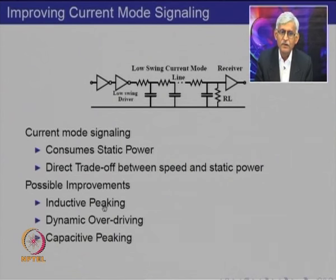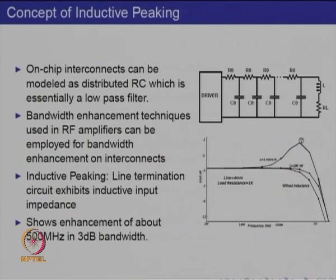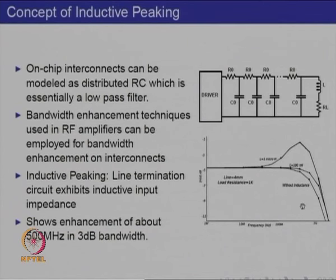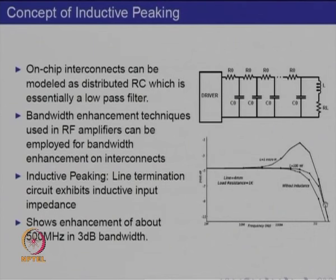But to begin with, let us look at inductive peaking. We had seen this in the last lecture and will quickly go over it again. Essentially, the termination now has an inductive component. Using ideal components, we first find out the effect of placing this inductance. These three curves correspond to no inductance, 100 nanohenries, and a microhenry respectively. These curves are on a log scale, so the extension of bandwidth is not negligible — you can increase the bandwidth at the 3 dB point by about 500 MHz.